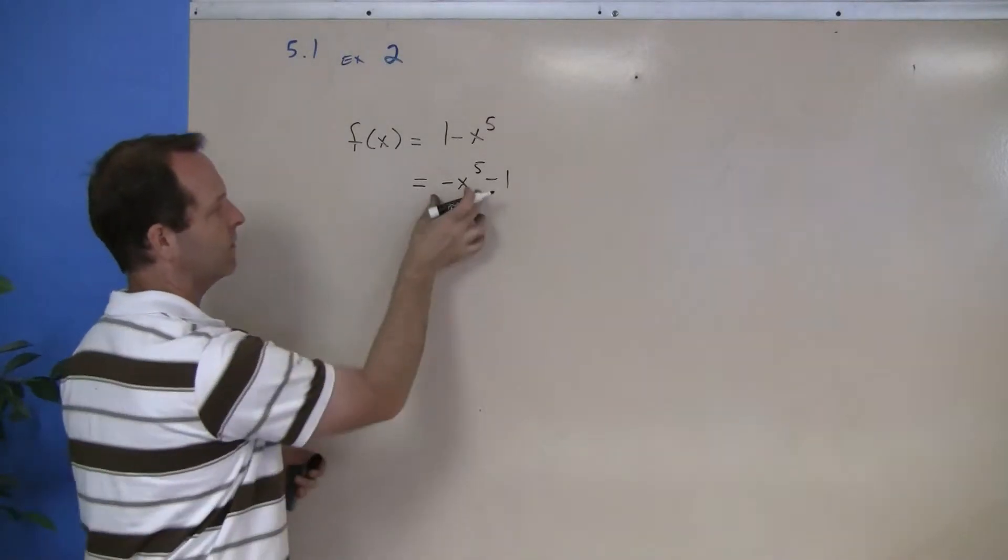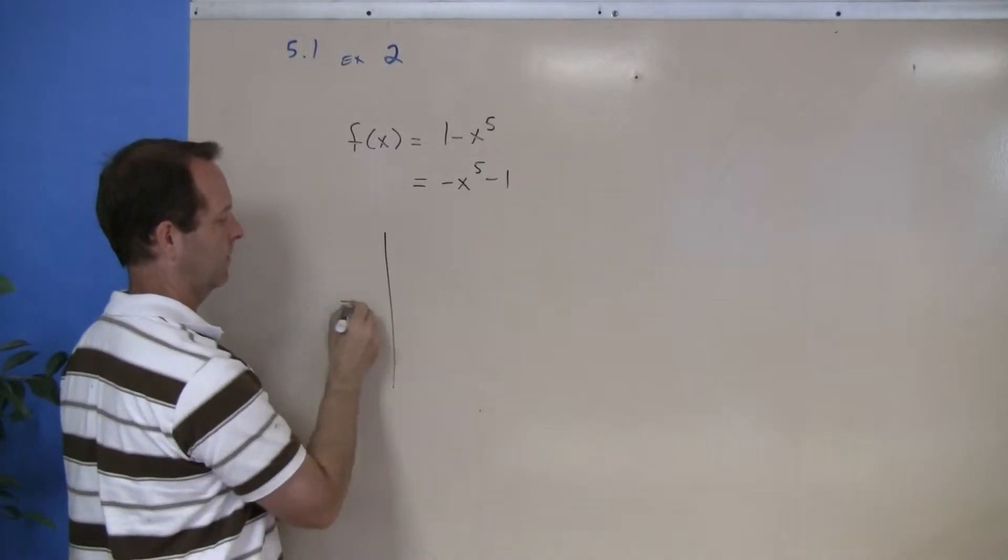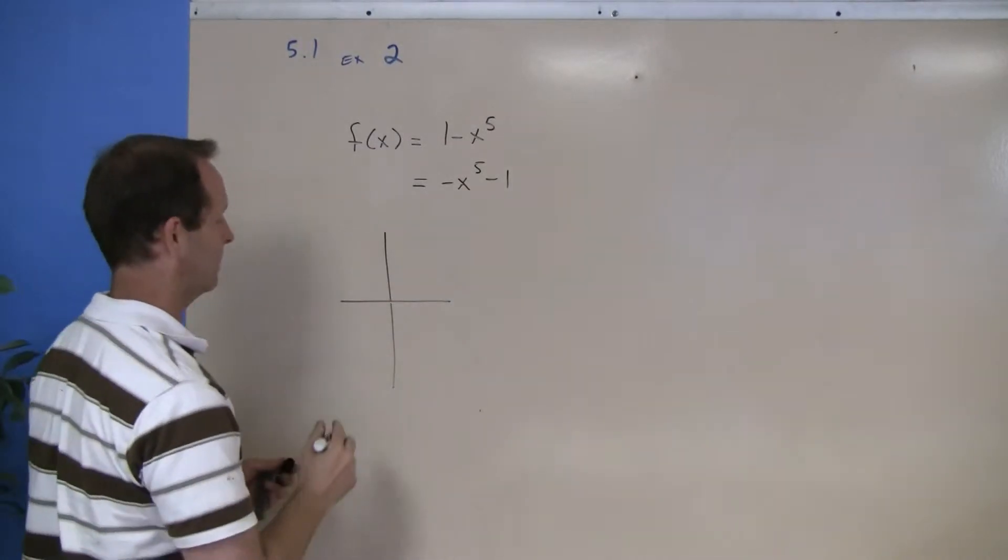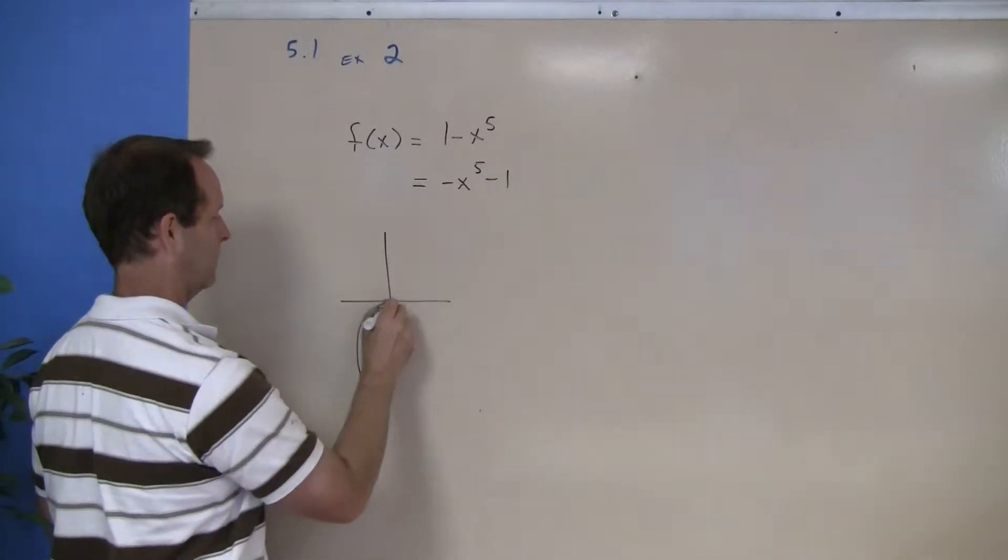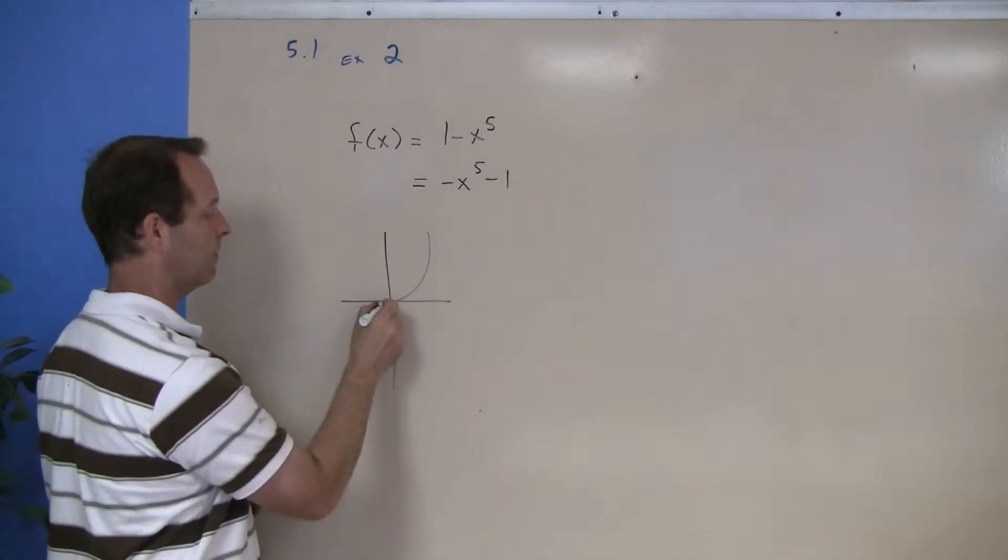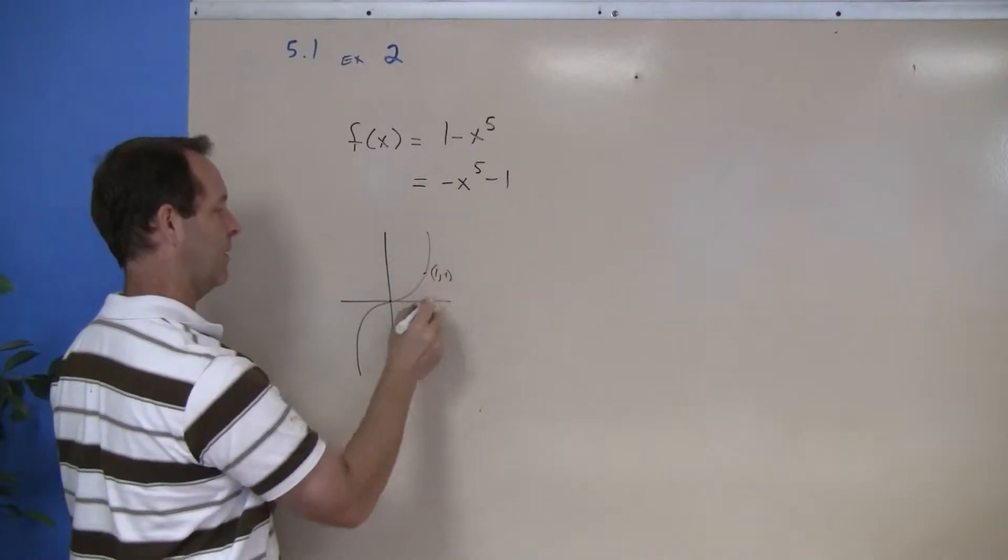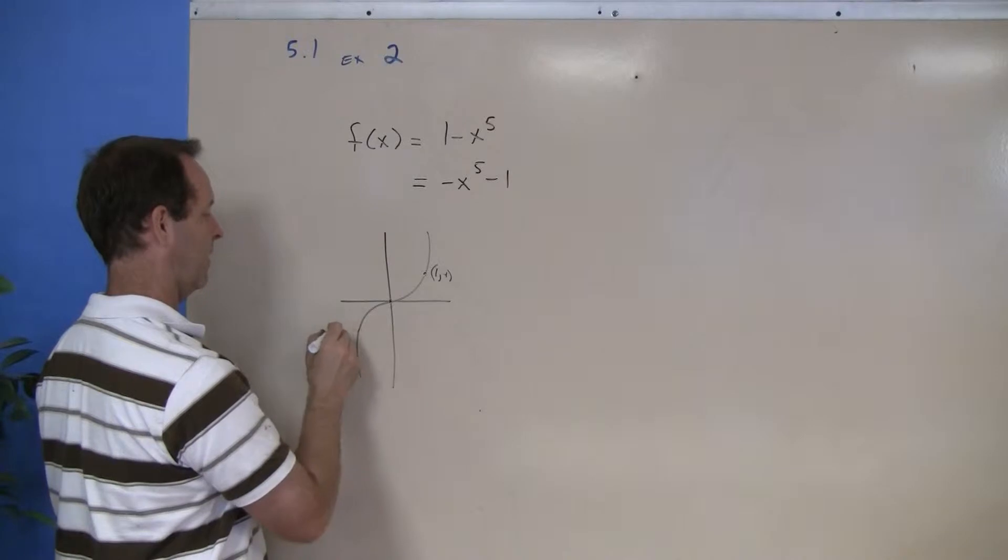I'm going to graph the x to the fifth component. x to the fifth roughly has that shape. Goes through the origin, goes to the point 1 comma 1.